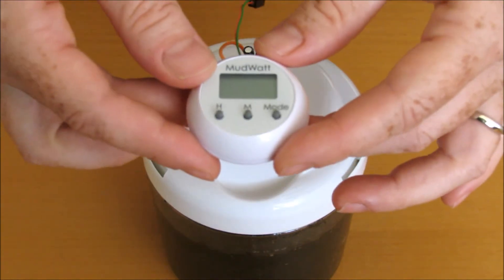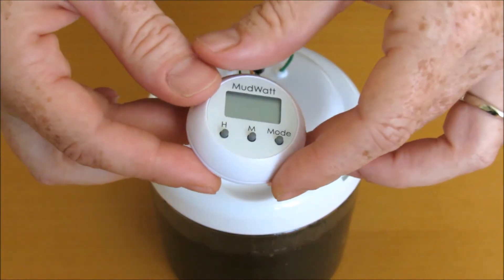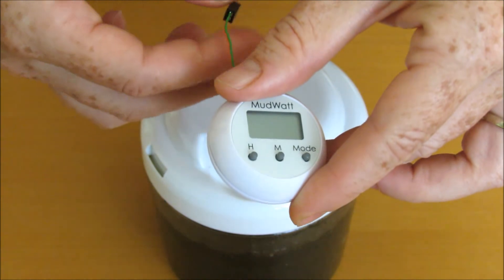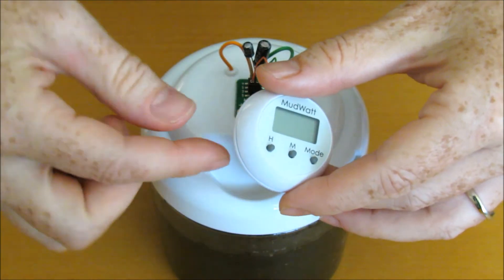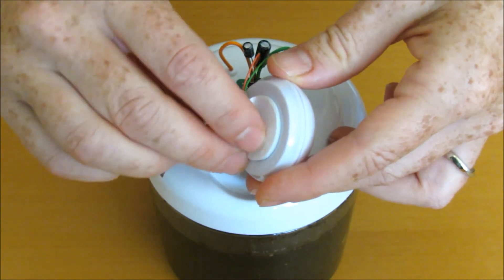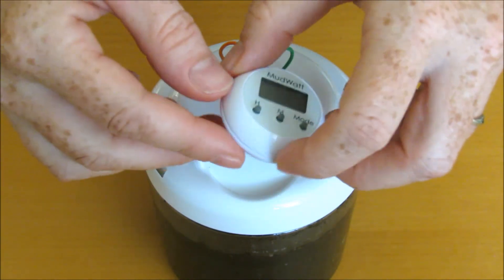Now we'll attach the clock thermometer. Put the end with the orange wire into pin 5 and the end with the green wire into pin 6. Remove the adhesive backing and place it into the indentation on the lid.